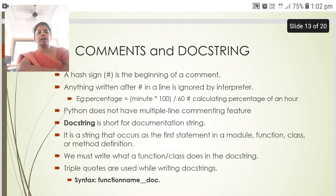The next is comments and docstring. A hash sign is the beginning of a comment. Anything written after hash in a line is ignored by interpreter. Python does not have multiple line commenting features. Docstring is short for documentation string. It is a string that occurs as the first statement in a module, function, class or method definition. We must write what a function or a class does in the docstring. Triple quotes are used while writing docstrings.